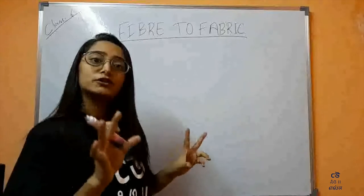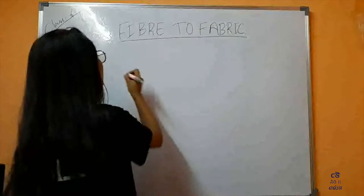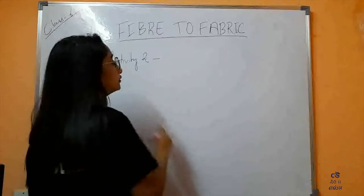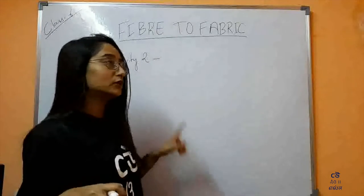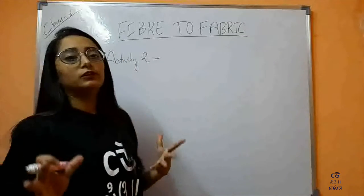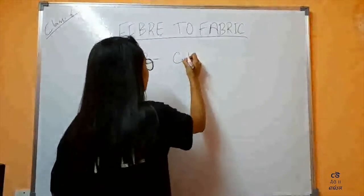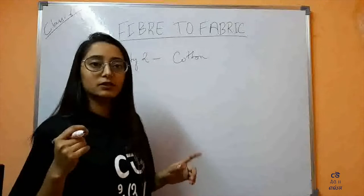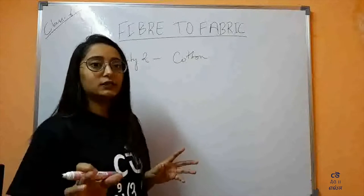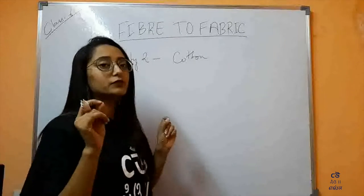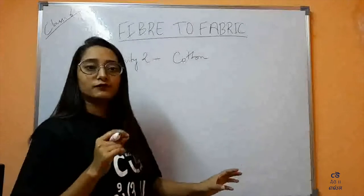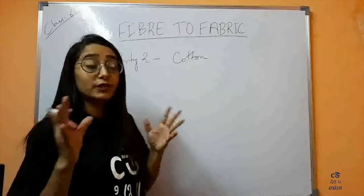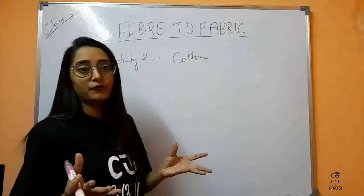Now with the cotton item that you have labeled in activity one, in activity two, take that same cotton fabric. What I want you to do is just pull the loose thread or yarn at the edges — you'll find it there. If you don't find it, you just need a needle to pull out one of the yarns or the loose thread. Each fabric is made up of yarns.